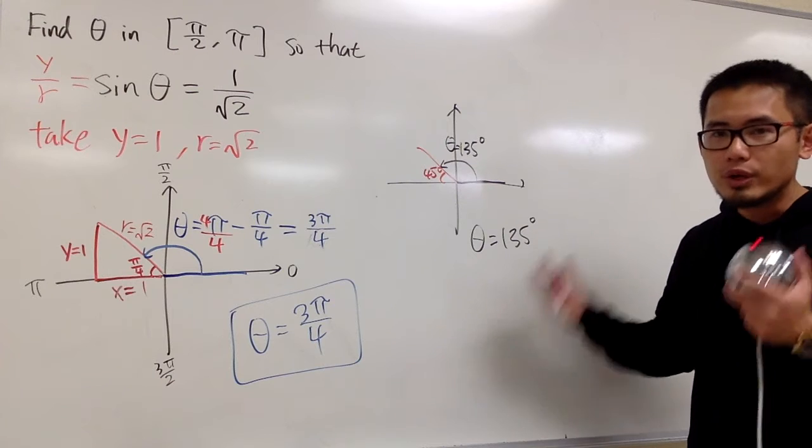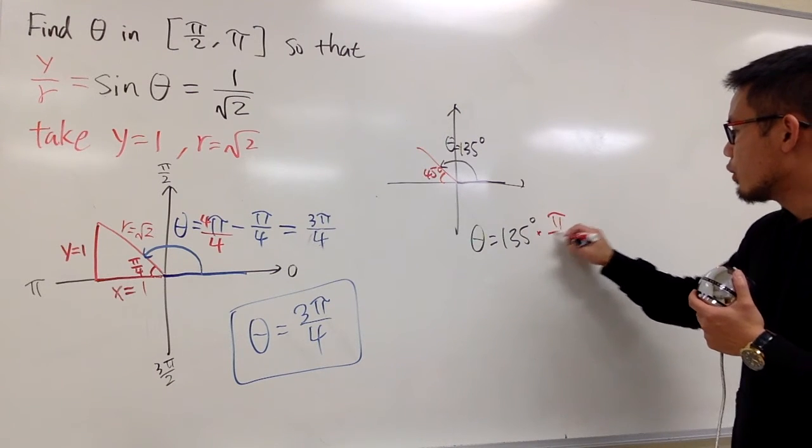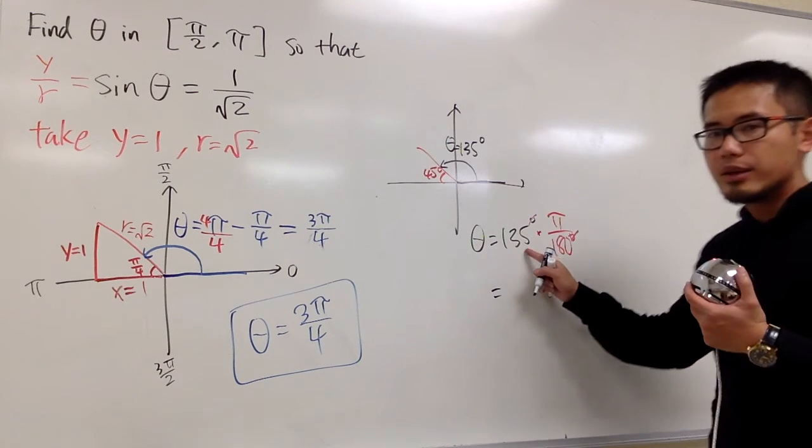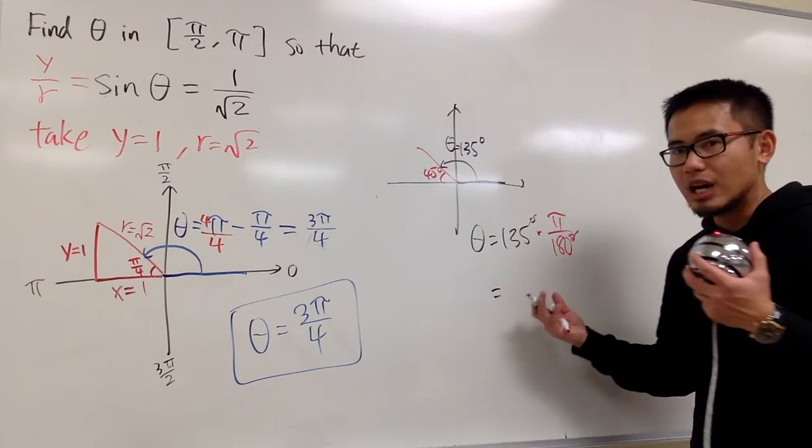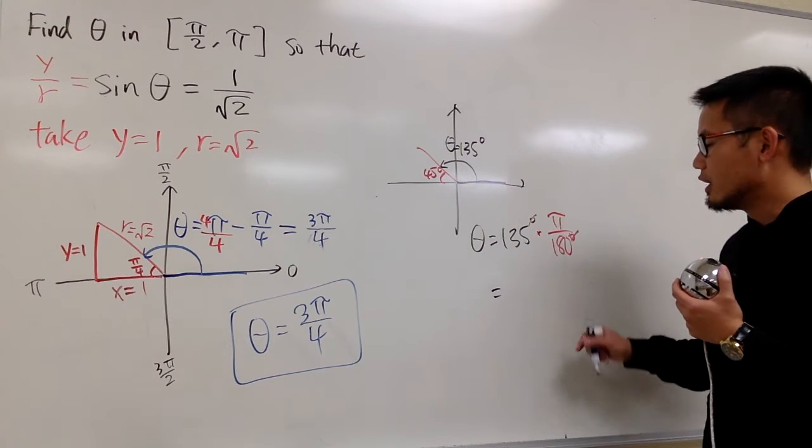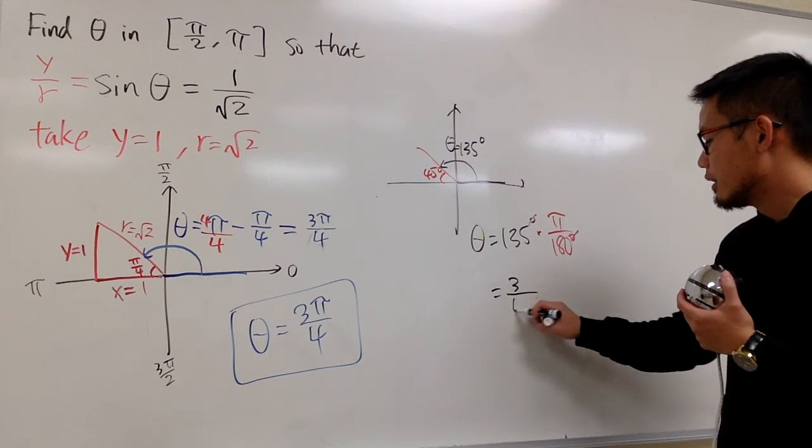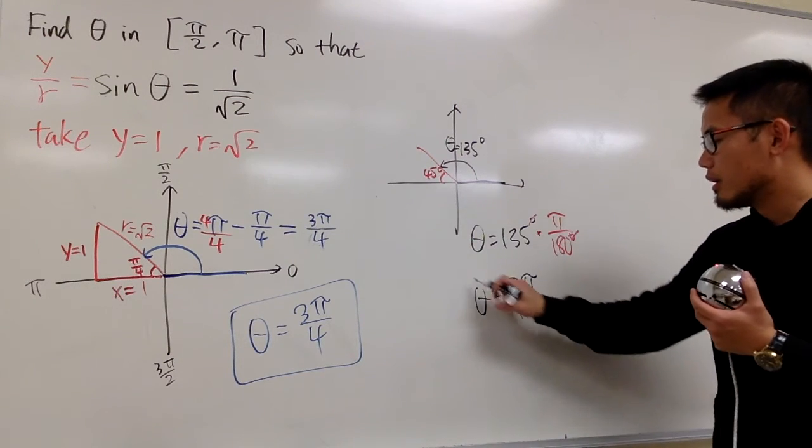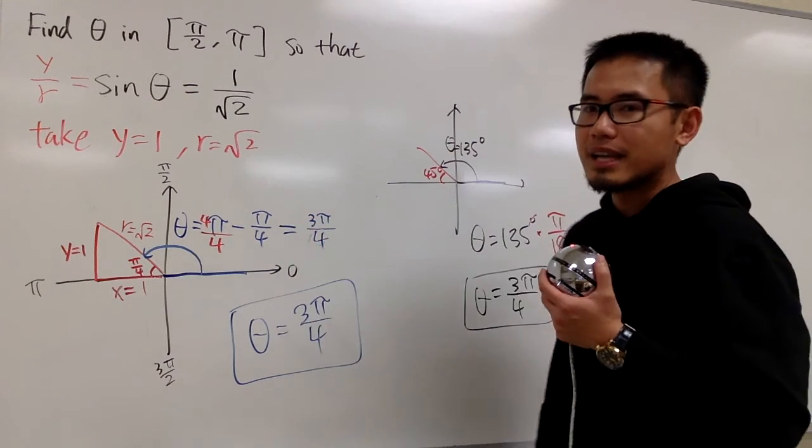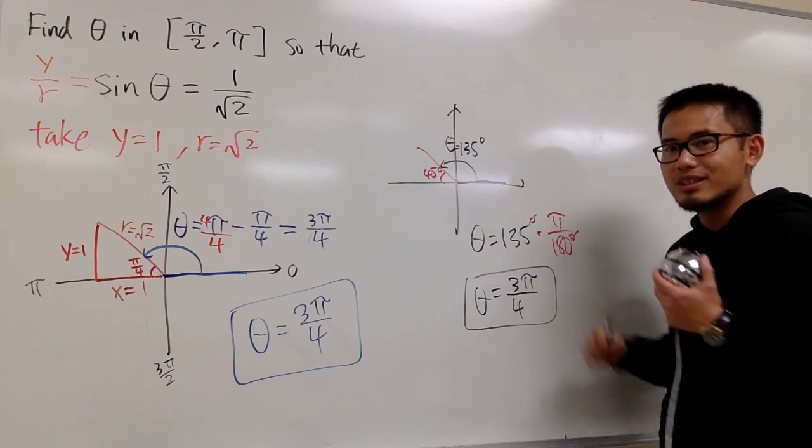You convert this into radians. You multiply by pi over 180 degrees, so the degrees will cancel. And you can just reduce this right here. 135 over 180, you'll also end up with 3 over 4, and then you put a pi right here. So depending on which way that you prefer, you can do a subtraction with pi, or you can just convert it into degrees and then convert it into radians after that.